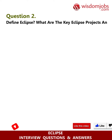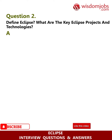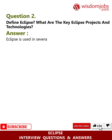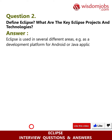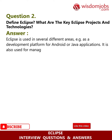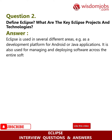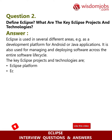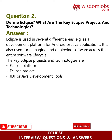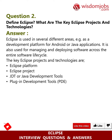Question 2: Define Eclipse. What are the key Eclipse projects and technologies? Answer: Eclipse is used in several different areas, for example as a development platform for Android or Java applications. It is also used for managing and deploying software across the entire software lifecycle.